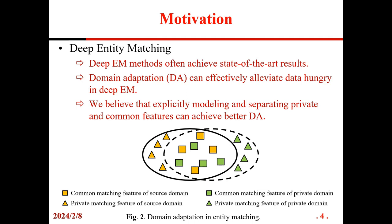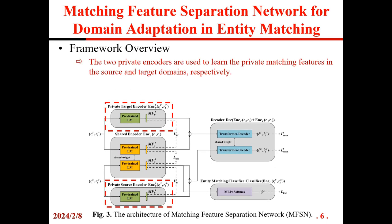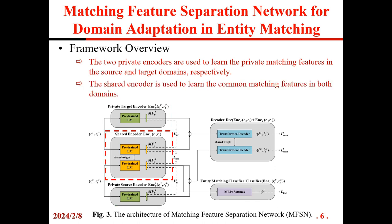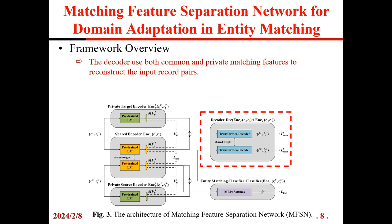We believe that implicitly modeling and separating the private and common features can achieve better Domain Adaptation performance. Our model is mainly based on domain separation networks and pre-trained language models. The two private encoders are used to learn the private matching features in the source and target domains. The shared encoder is used to learn the common matching features in both domains. The similarity loss and difference loss are used to separate the common and private matching features. The decoder uses both common and private matching features to reconstruct the input pairs.